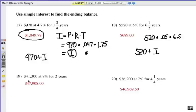Number 19. You're going to do the 41,300. That's your principal. That's going to be .08 and then times 2. So multiply those three numbers together. You're going to add that back on to 41,300. There's your answer.